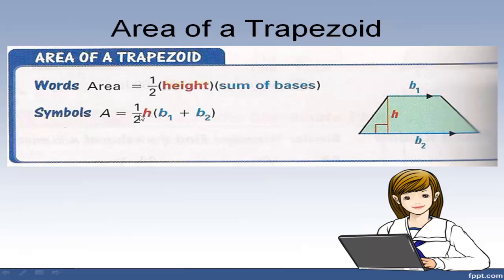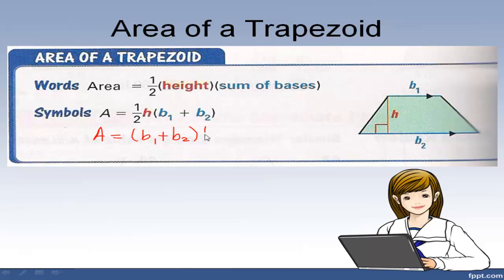This formula for area is very similar to the area of a triangle. The area of a triangle is one-half the base times the height. This is exactly the same thing except that the base is made up of two bases, so we have to add the bases first, then multiply by the height, and then divide by 2. I like to write this formula as: base 1 plus base 2, times h, everything divided by 2.